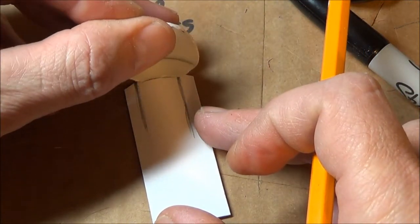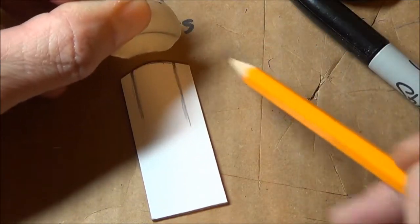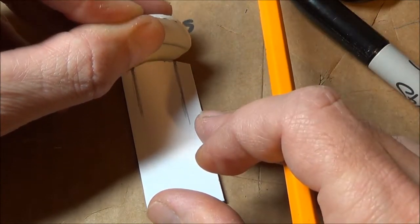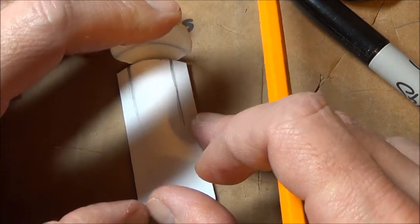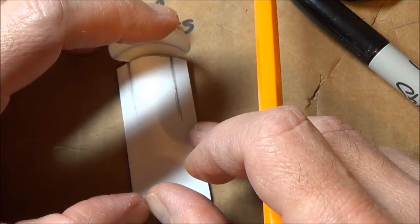So how I did that was I started on top, traced it, cut it a little big, test fit it, made a few adjustments. So that's the curve I'm going to use for the floorboard. No one's really going to see this.